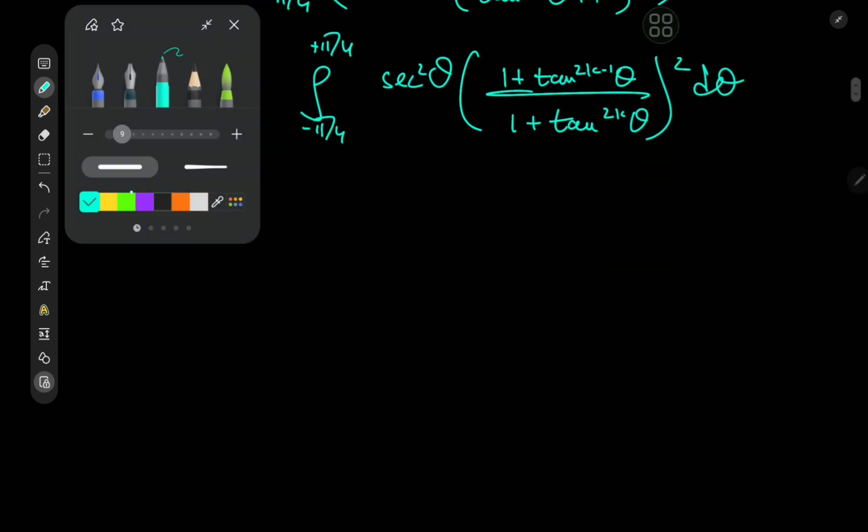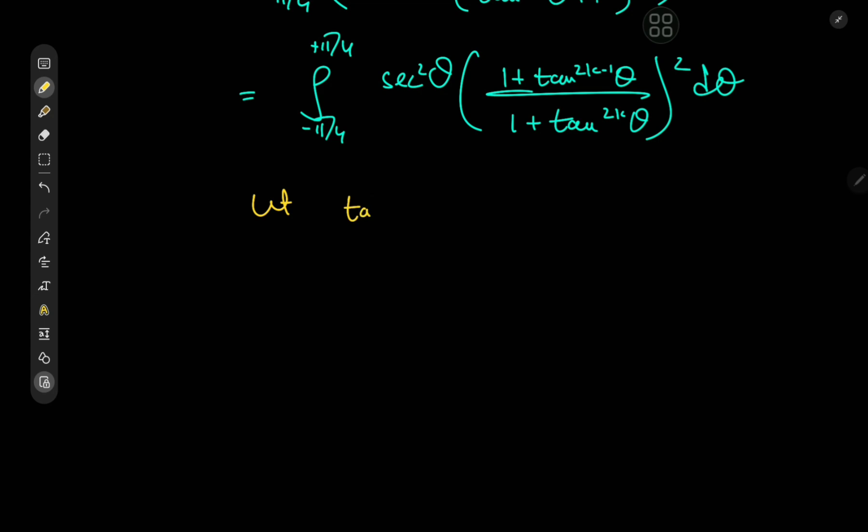And now we're well-placed to make a nice substitution here. We're going to let tan θ = x, which implies that sec^2θ dθ = dx. And as θ approaches -π/4, x which is tan θ approaches -1, and we have the corresponding case for positive π/4. So we have I now being the integral from -1 to 1 of (1 + x^(2k-1)) / (1 + x^(2k))^2 dx, which is quite nice.